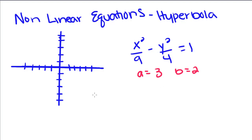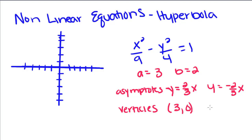And its asymptotes are going to be at y equals positive 2/3 x and negative 2/3 x. It's going to have vertices at positive (3,0) and negative (-3,0).